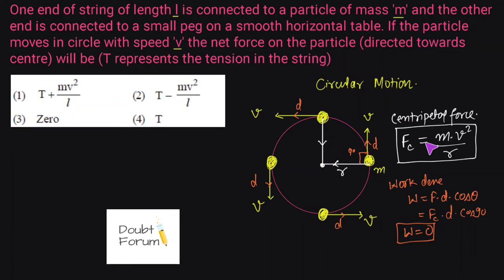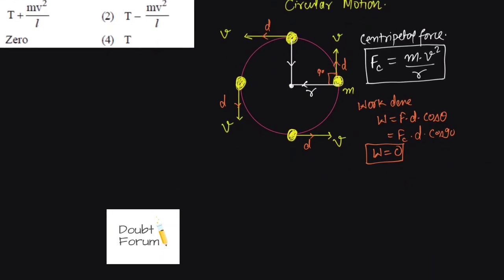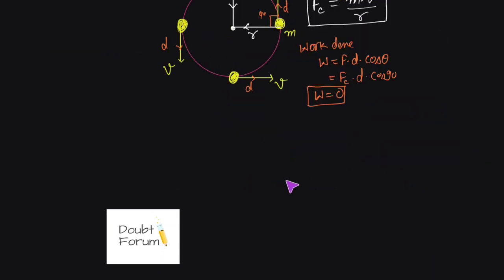So actually no work is done by the centripetal force, but this force is required for any object to move in a circular path — it always directs towards the center. Now let's take the example of a string. When a mass M is attached to a string, whenever we take a string, attach a stone to one end and start rotating it, we feel a stress in the string. That stress is nothing but the tension in the string.